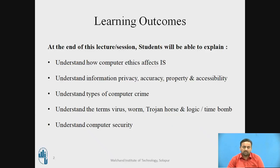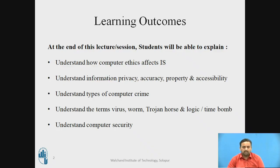The outcomes of this session are that you will understand how computer system ethics affects the information system. You will be able to understand privacy, accuracy, property, and accessibility, which are the different types of computer crimes, and the different types of attacks — virus, worm, trojan horse, logic and time bomb, and related things. After that, you will understand how to provide security.